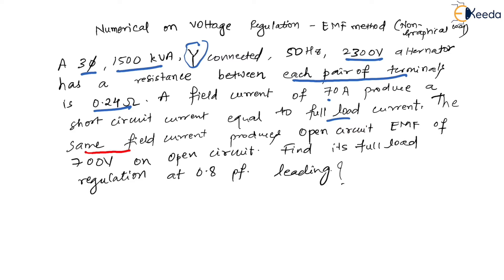The same field current of 70 amperes also produces an open circuit EMF of 700 volts. So because of this 70 ampere field current, the short circuit current ISC flows, and on that same field current, whatever voltage we get is the open circuit voltage VOC. So VOC is 700 volts — that is a very important point.